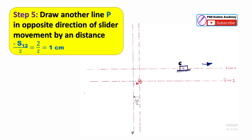Step 5: The displacement between the first and second position of the slider is S₁₂ equal to 2 cm. Suppose the slider moves outward from the crank end. For a slider moving outward, displace or draw another line P in the opposite direction of slider movement by a distance of minus S₁₂ divided by 2 equal to 2/2 equal to 1 cm. Shift this vertical line by 1 cm in the opposite direction to the displacement of the slider.